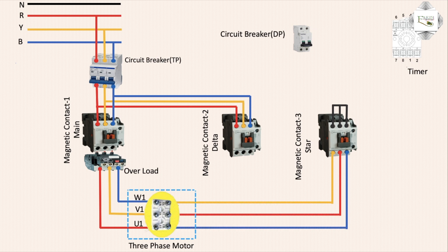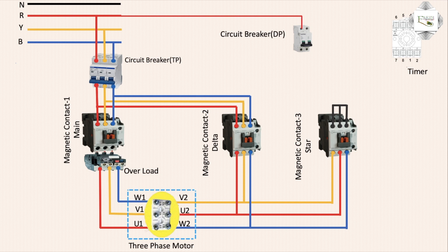Star connection magnetic contact outlet to motor connection, delta connection to line short, serial link. Second phase V1, first phase U1. U2 and W2 third phase below. Switching using first phase — red and neutral means 220 volt.